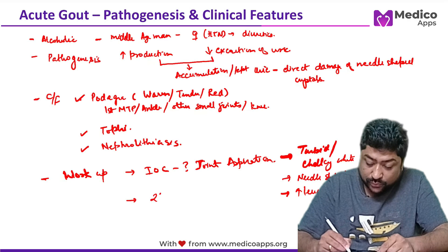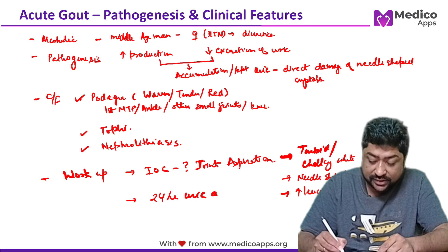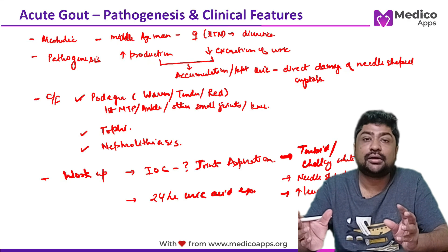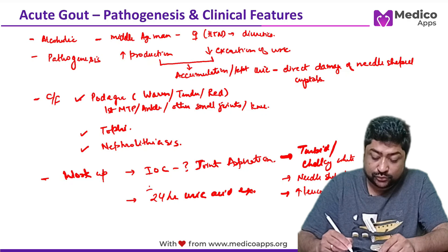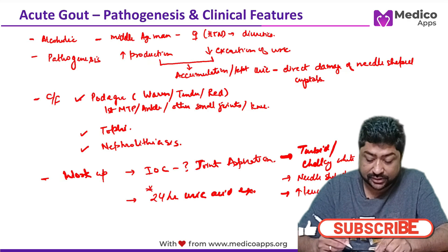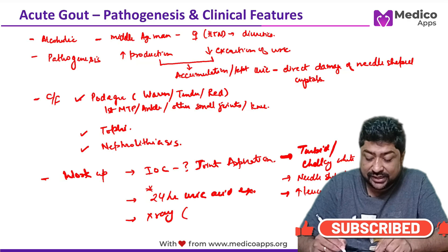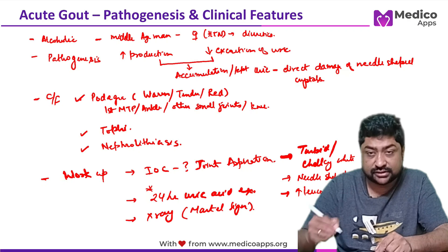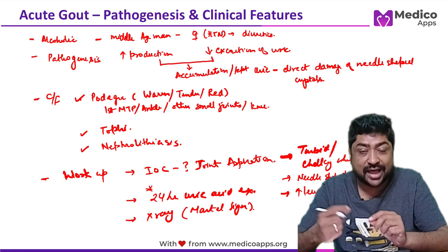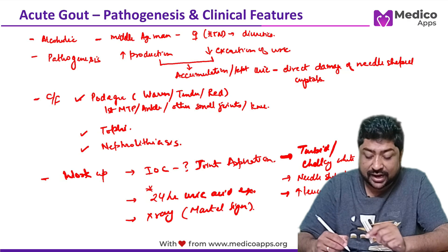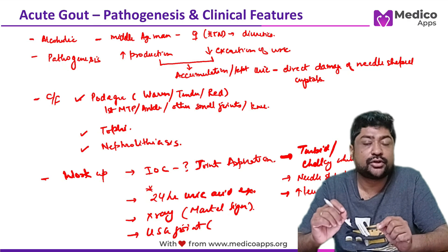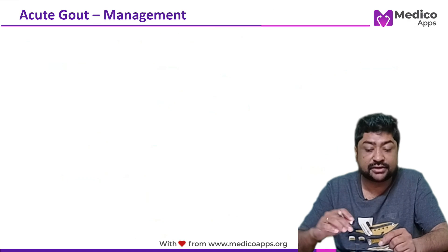A 24-hour uric acid excretion in urine can differentiate between over-producers and under-excretors of uric acid. An X-ray is also done; a very important sign is the Martel sign, which represents sclerotic damage to the articular surface of the joint. On USG of the joint, you will see a double contour sign — this represents hyperechoic uric acid crystal deposits on the articular surface.